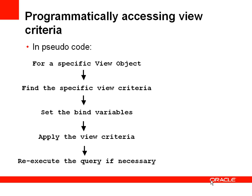So how do you programmatically access a view criteria? In this example I'll be accessing it from the user interface via a button. In pseudo-code: look at the view object, which holds information about the query statement; find a predefined view criteria set up at design time (for example filtering on job ID or department ID); programmatically set bind variables for flexibility; apply the view criteria; and optionally re-execute the query, since changing a view criteria doesn't affect the data until it is re-queried or refreshed.